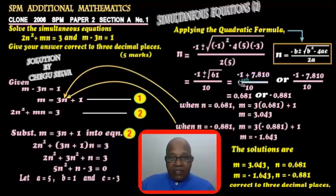So the n value is equal to negative 1 plus 7.810 over 10, or negative 1 minus 7.810 over 10, which equals 0.681 from here, or negative 0.881 from here.